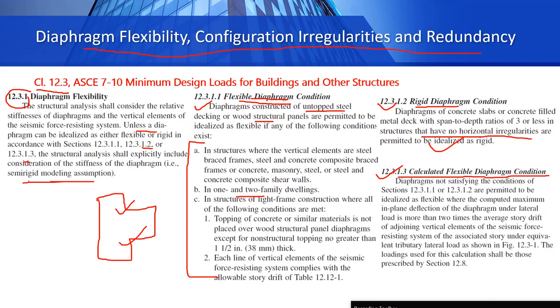However, since our building has re-entrant corner irregularity — meaning it is not perfectly square or rectangular — this is a type of horizontal irregularity. Because horizontal irregularity is present, we cannot assign rigid diaphragms either. We have to change the diaphragm from rigid to semi-rigid in our model.